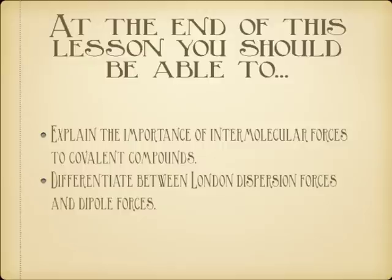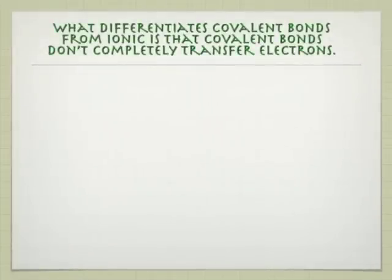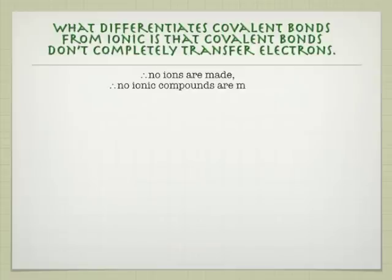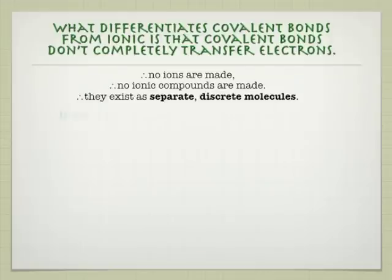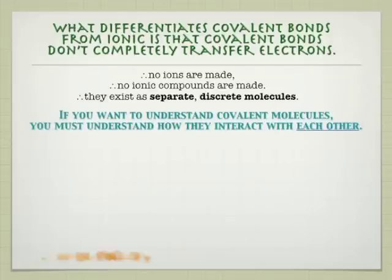You're alive today only because of intermolecular forces, and these are weak physical forces between covalent molecules. To do that we have to first review what differentiates covalent compounds from ionic compounds. What makes a covalent compound different is that we don't transfer electrons, so we're not creating any ions, not making ionic compounds, not doing crystal lattices — we have discrete individual molecules that can start interacting with each other.